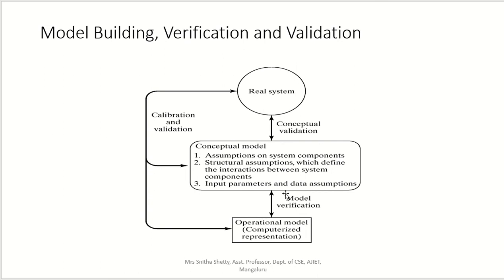When we compare a model with the conceptual model, we call it model verification. When we compare a model with the real system, we call it validation and calibration. The conceptual model itself is built by taking attributes from the real system — that is known as conceptual validation. So the three types are: conceptual validation, model verification, and model calibration and validation.